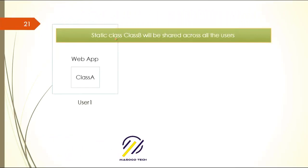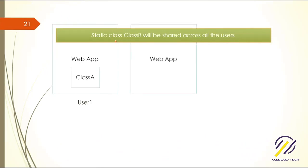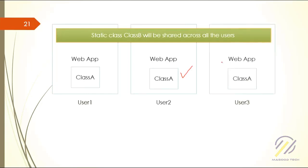When user 2 comes in, class A will be created again specifically for user 2, but class B will not be created again — it will be shared across the application. The same applies for user 3: class A is created again. If user 2 leaves, their class A instance is gone, but the static class B still remains.